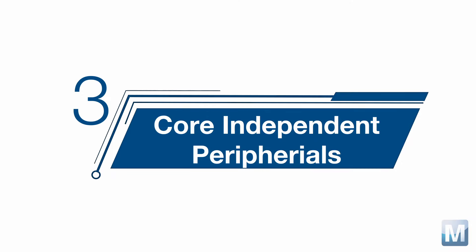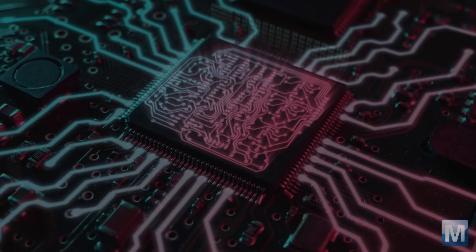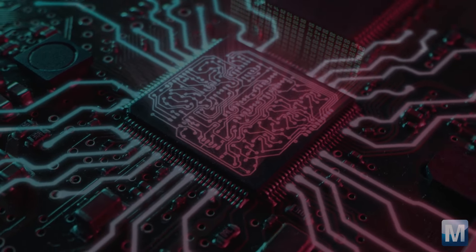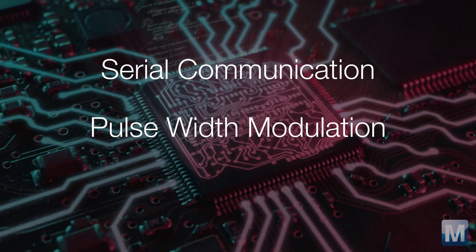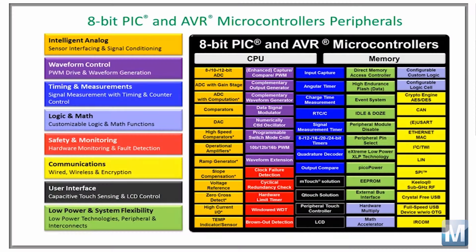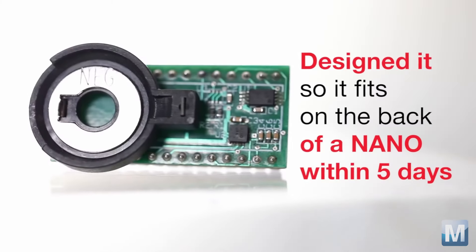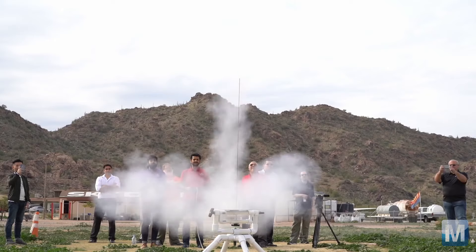Number 3: Core Independent Peripherals. Depending on the design, up to 50% of the CPU bandwidth is used managing peripherals such as serial communication, PWMs, and analog functions. Core independent peripherals automate tasks normally done by the CPU, resulting in a more responsive system that uses less power and requires less code to be written, which gets you to market faster.